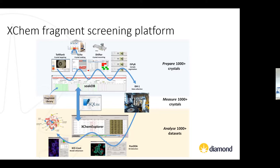Previously X-ray crystallography wasn't considered a high throughput method for identifying fragment hits, but thanks to developments in both synchrotron technology and sample preparation, this has now become much more accessible, largely thanks to the XChem screening platform. The key advantage of X-ray crystallography is that it's an even more sensitive method compared to NMR and SPR, but also gives you structural information directly — so you know how you can go about optimizing these fragments into more potent lead-like molecules.